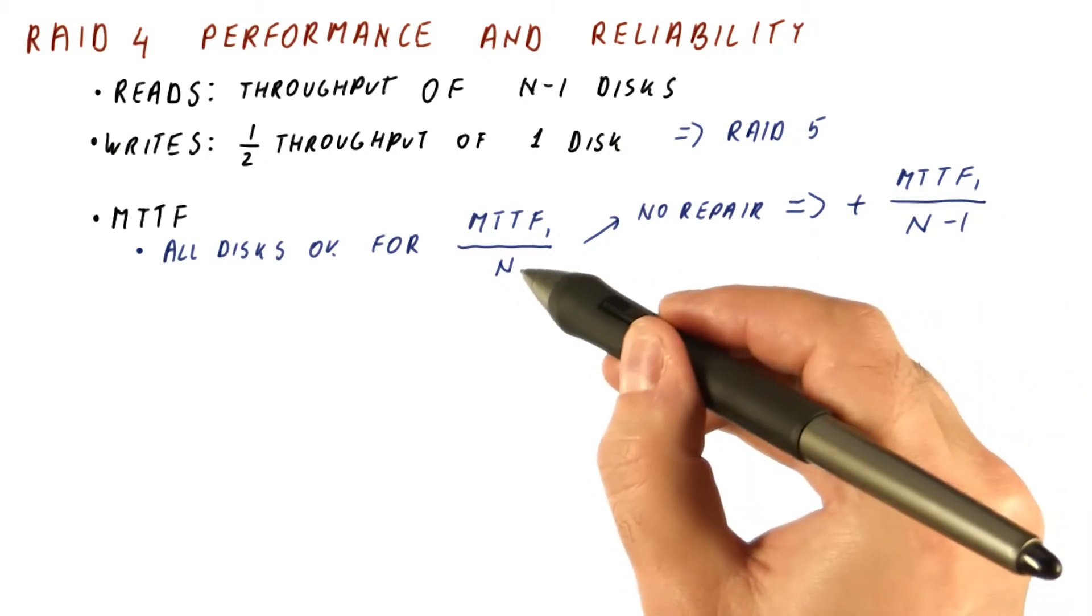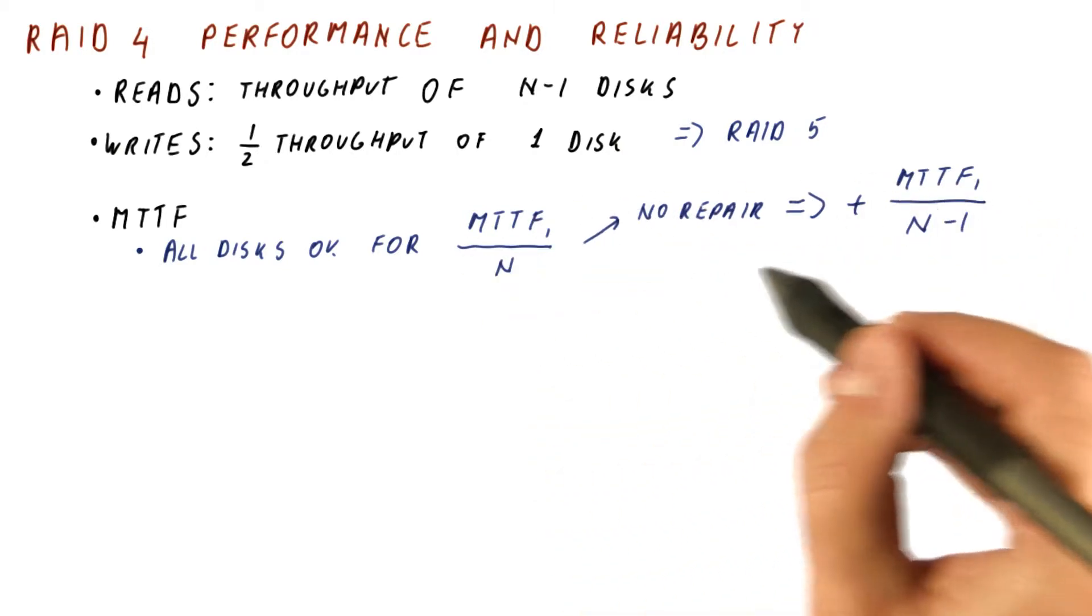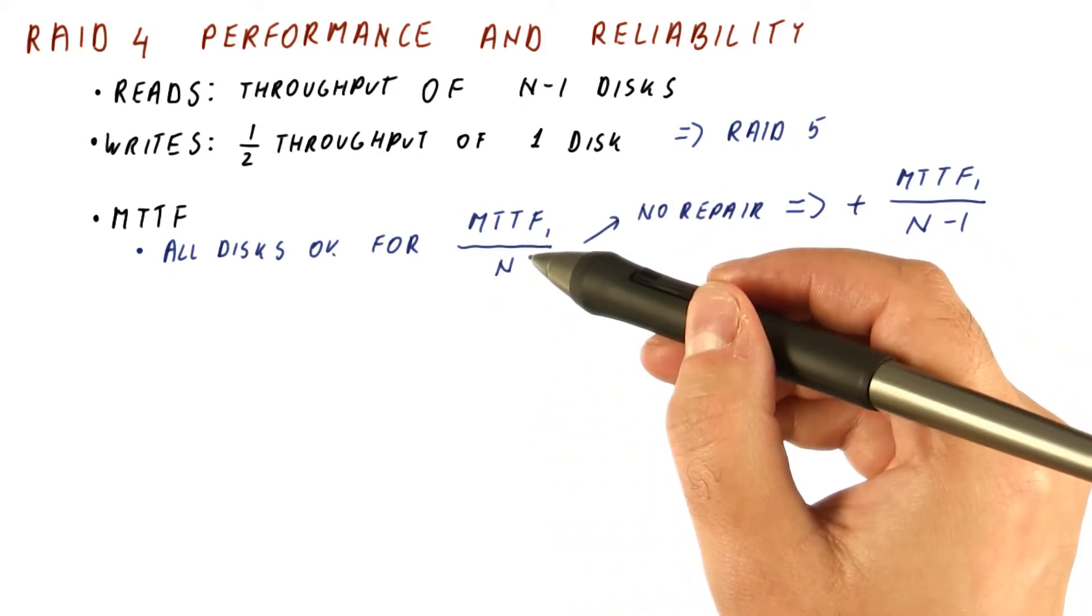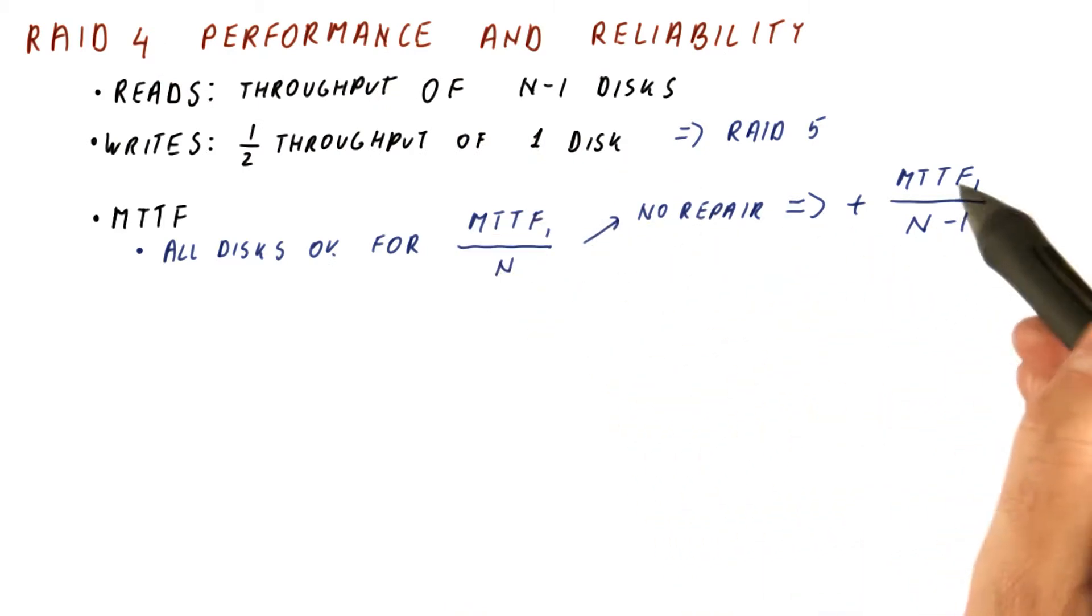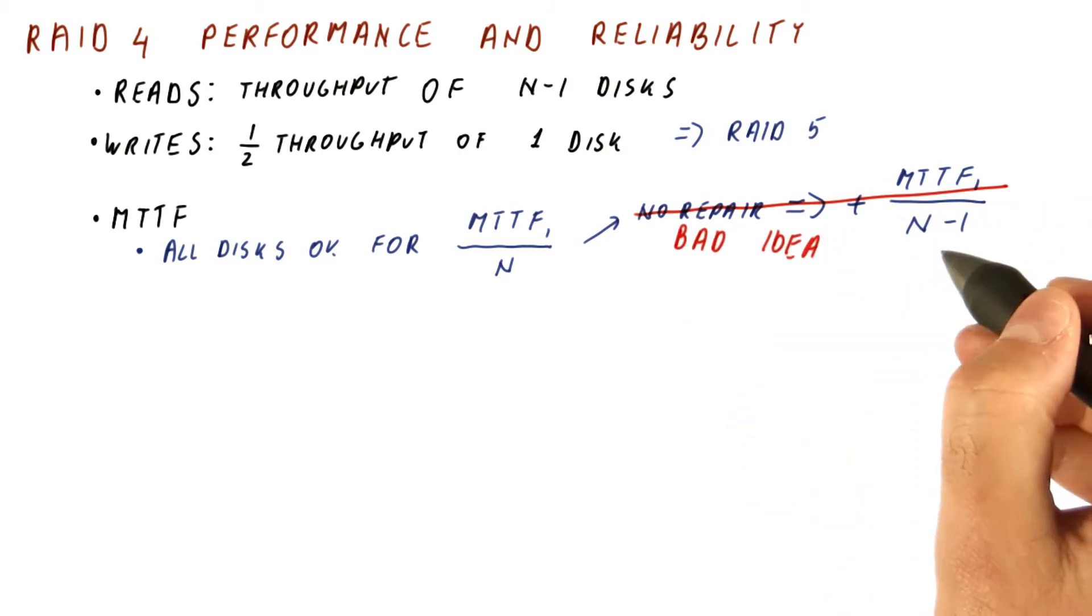This plus this, if n is, let's say, 4, is not going to be better than the MTTF of a single disk. So you don't want to even consider using RAID4 unless you're going to do repairs. So pretty much you don't do this because it's a bad idea. You're not getting any increased reliability.